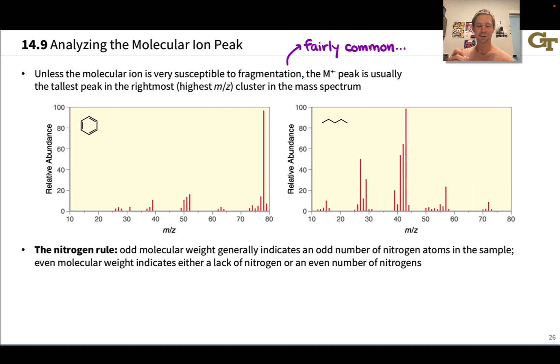Here for example, if we know the sample is benzene, that's C6H6, that corresponds to a molar mass of 78 grams per mole. So we should go looking for the molecular ion here at m/z 78, and in fact we see it right there, the tallest peak in that rightmost cluster.